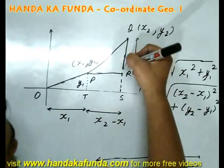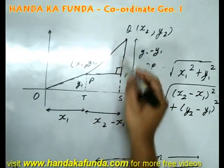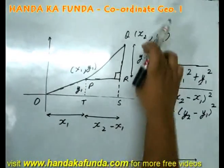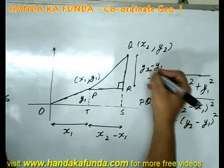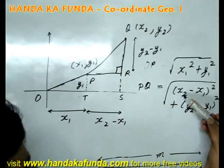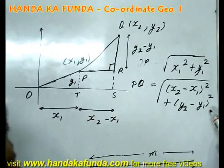The distance between the two points PQ is nothing else but the hypotenuse of the right angle triangle PQR where the base PR is x2 minus x1, the height QR is y2 minus y1. So, the hypotenuse will be base square plus height square or x2 minus x1 whole square plus y2 minus y1 whole square.